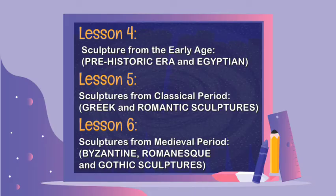Lesson 4 is about sculptures from the early age, prehistoric era, and Egyptian. Lesson 5 is about the sculptures from the classical period, Greek and Roman sculptures. And Lesson 6 is about the sculptures from the medieval period — Byzantine, Romanesque, and Gothic sculptures.